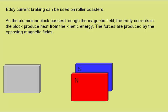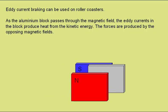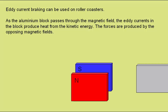As the aluminium block passes through the magnetic field, like this, the eddy currents within the block will produce heat from the kinetic energy. The forces which cause the slowing are produced by opposing magnetic fields.